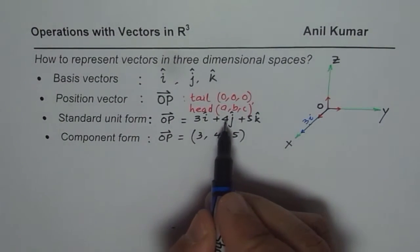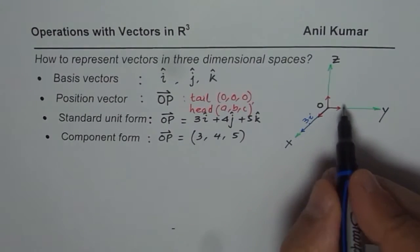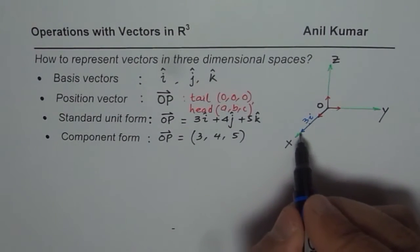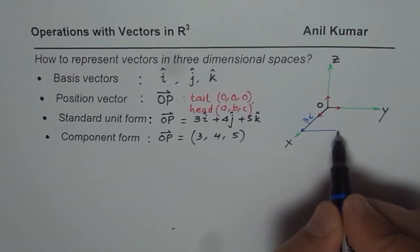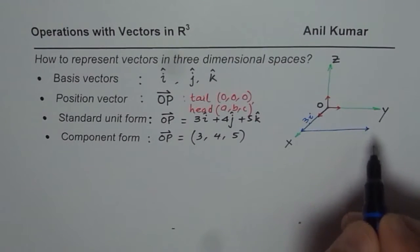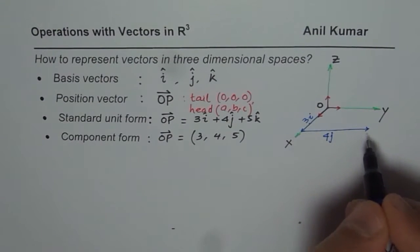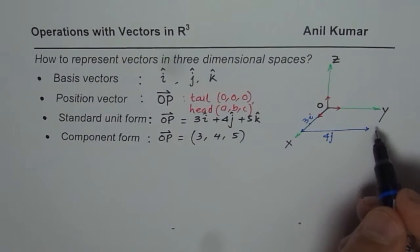Now we add 4j. That means four units along Y, which is parallel to the Y axis. Let me go four units: 1, 2, 3, and 4. So this is four units towards Y.